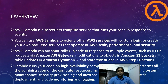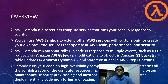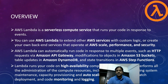As part of the overview, you will get high-level information on what is AWS Lambda. AWS Lambda is a serverless compute service which will be triggered as part of events. You can use AWS Lambda to extend other AWS services with custom logic. Lambda can automatically run code in response to multiple events such as HTTP requests via Amazon API Gateway, modifications to objects in Amazon S3 bucket, table updates in Amazon DynamoDB, and state transitions in AWS Step Functions.